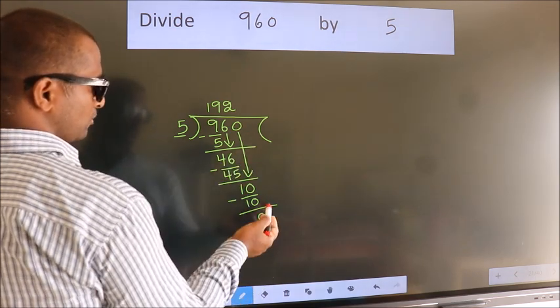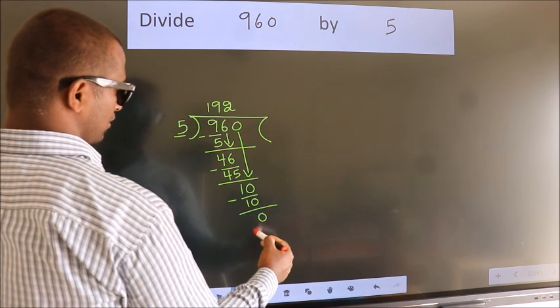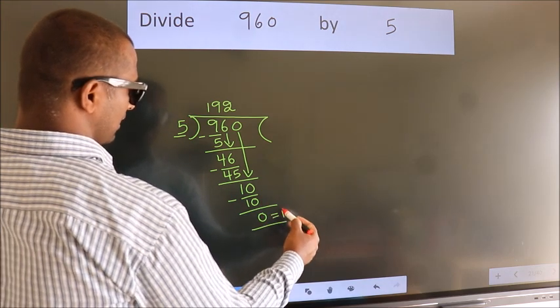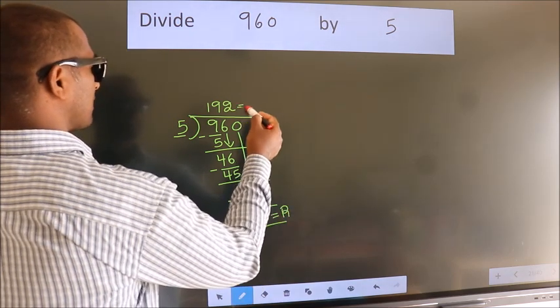No more numbers to bring down. So we stop here. This is our remainder. This is our quotient.